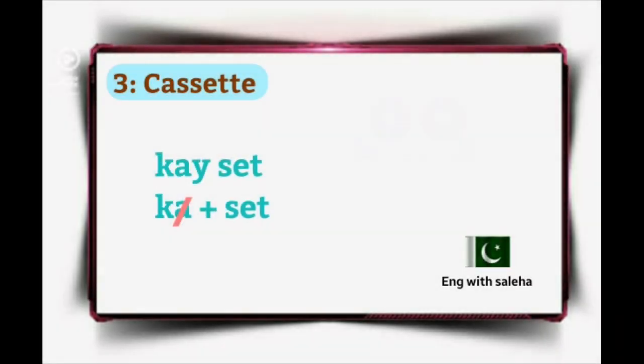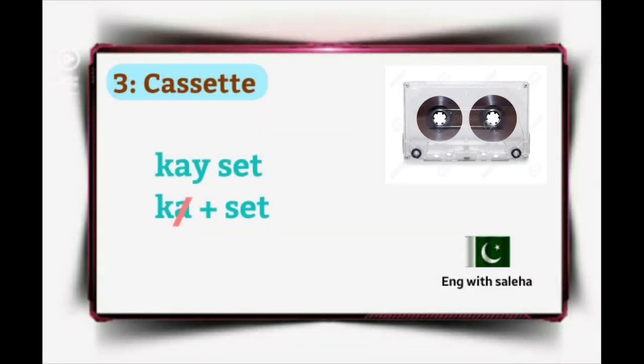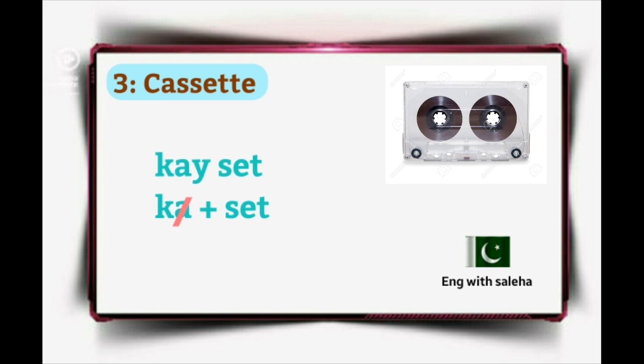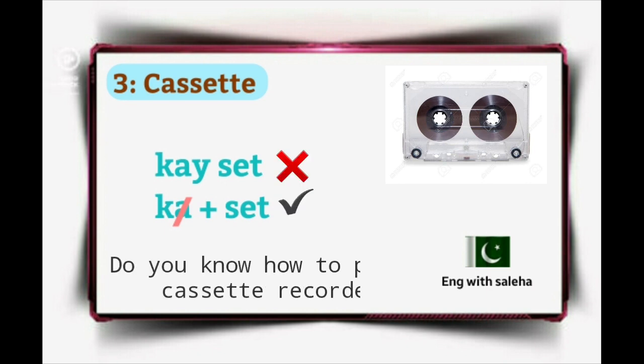Number 3: Cassette. It's not 'k-set,' it's 'cassette.' The 'a' sound after the 'k' sound is silent. Example sentence: Do you know how to play a cassette recorder?